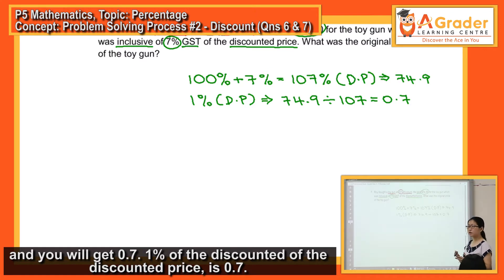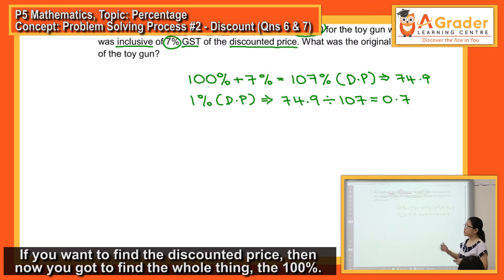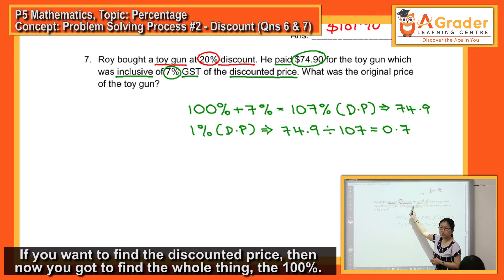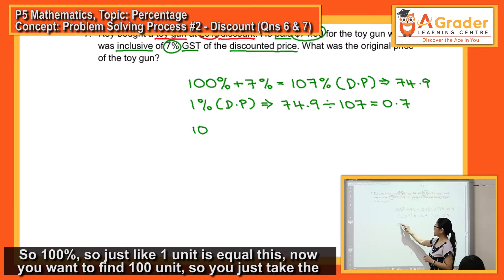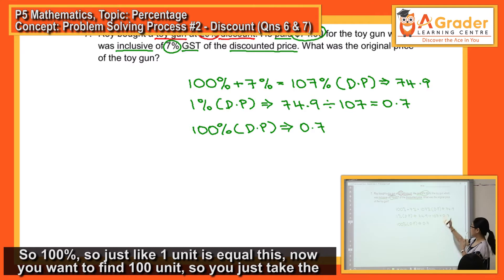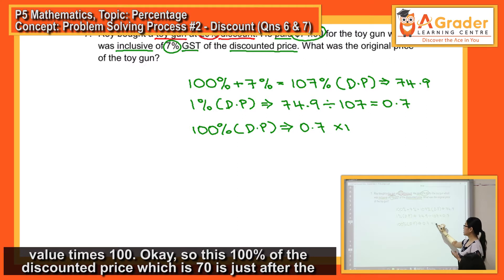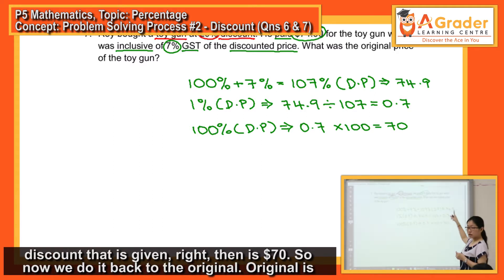If you want to find the discounted price, then now you've got to find the whole thing, the 100%. So, just like 1 unit equal to this, now you want to find 100 units. So, you just take the value times 100. So, this 100% of the discounted price, which is $70, is just after the discount that is given, then it's $70.